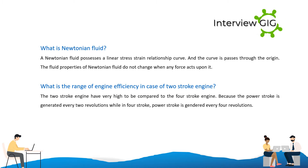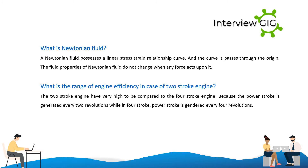What is the range of engine efficiency in the case of a two-stroke engine? Two-stroke engines have very high efficiency compared to four-stroke engines because the power stroke is generated every two revolutions, while in a four-stroke engine, the power stroke is generated every four revolutions.